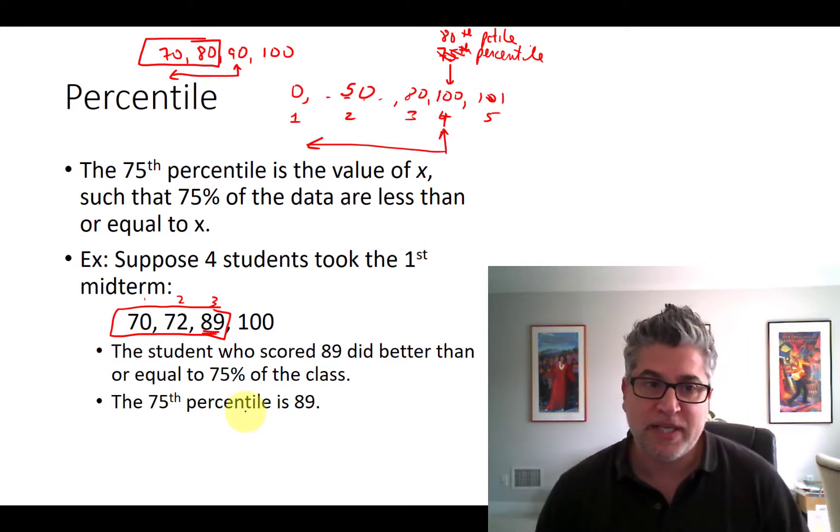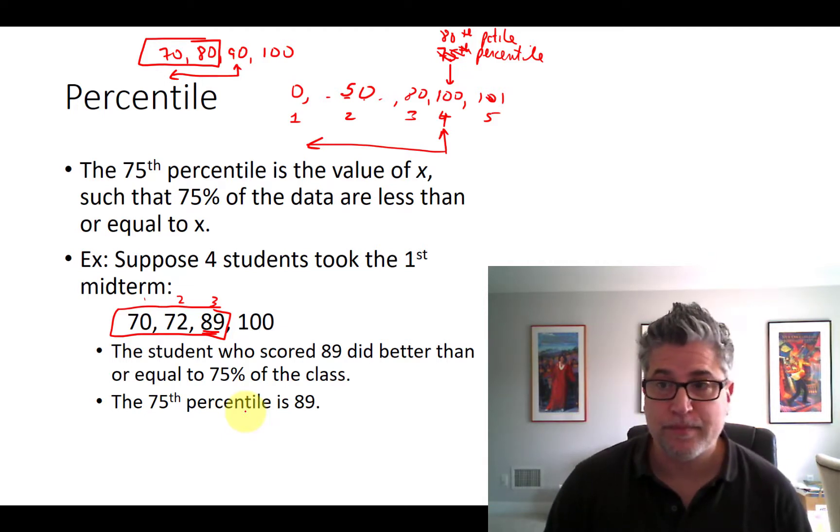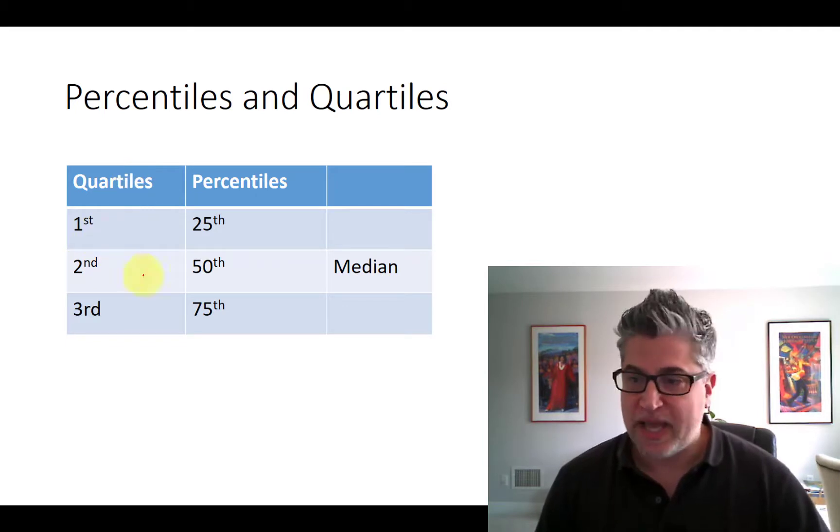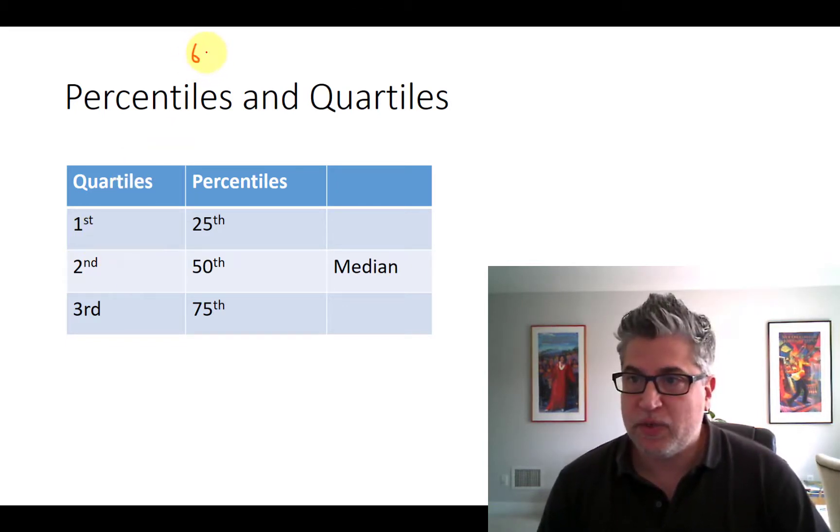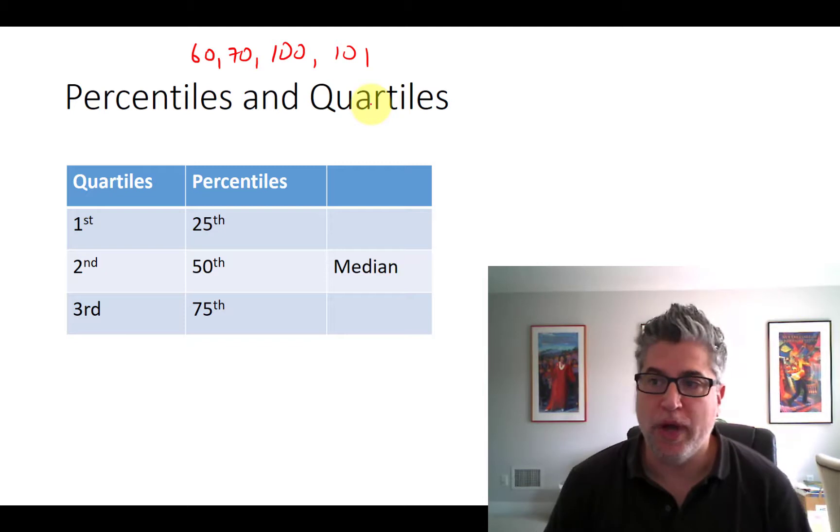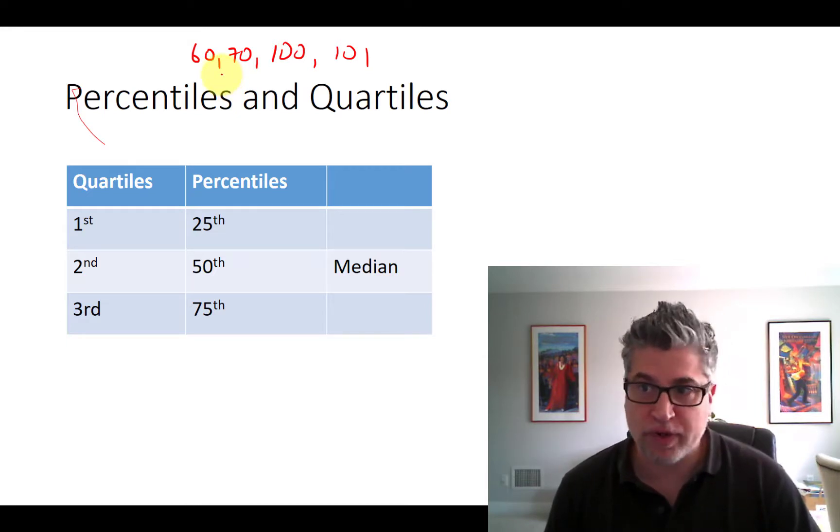Let's go from percentile to quartile. So you've got this data set of four exam scores. You've got somebody scoring 60, 70, 100, and bonus points, 101. Since you've only got four students, then they get split up nicely into fourths.